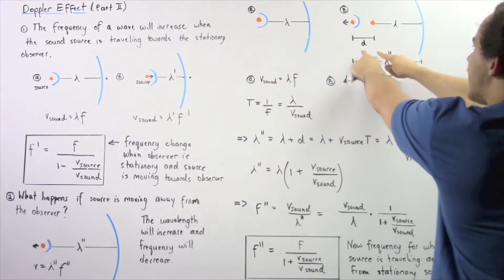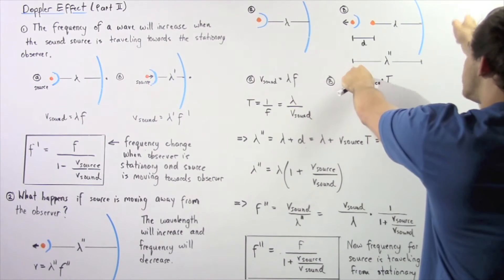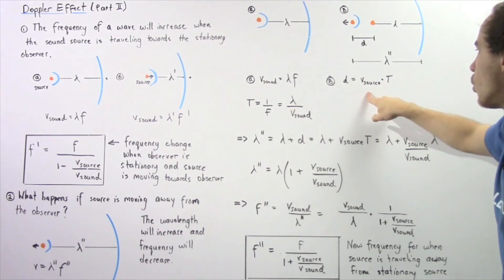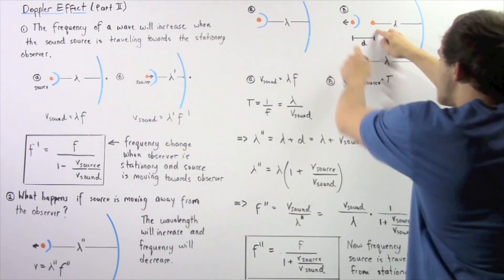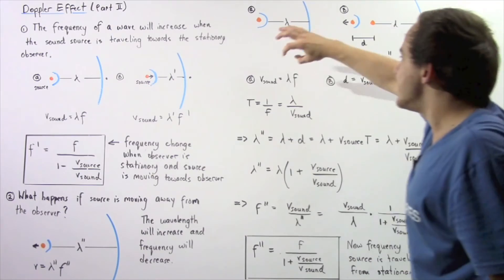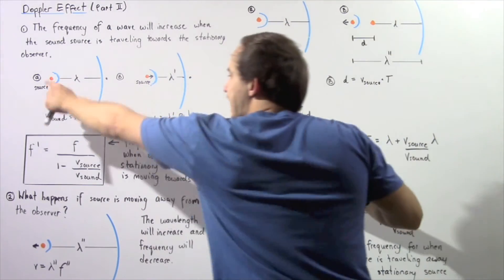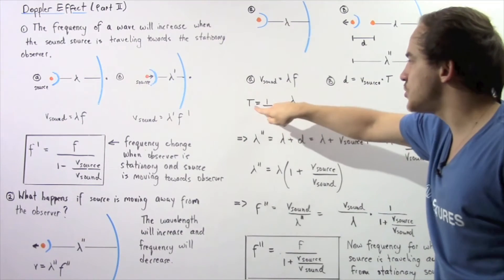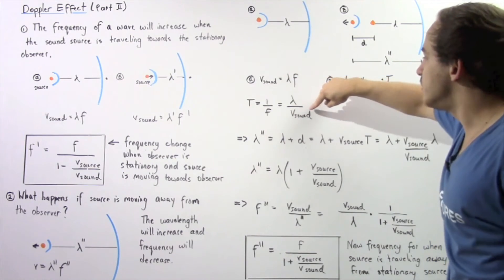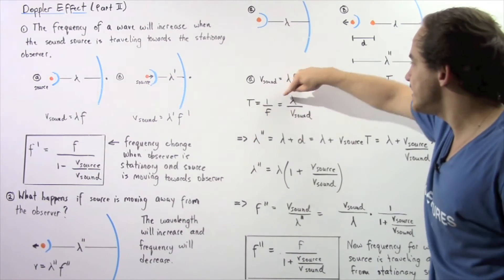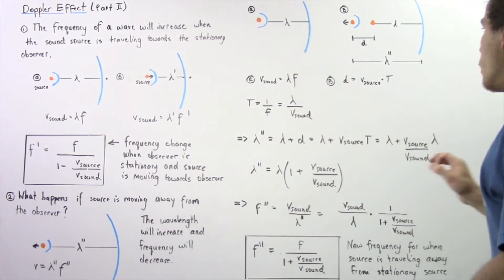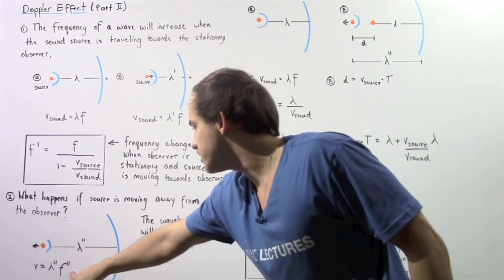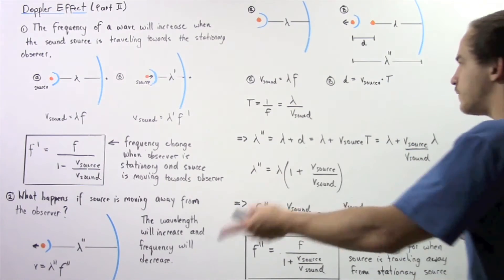This entire distance between one crest and the next is our new wavelength lambda 2 prime, and this portion is lambda, so d equals lambda 2 prime minus lambda. The distance d is simply V source multiplied by T. Since V sound equals lambda times frequency, and the period T equals 1 divided by frequency, we get T equals lambda divided by V sound. So lambda 2 prime equals lambda plus d, which is lambda plus V source times T.